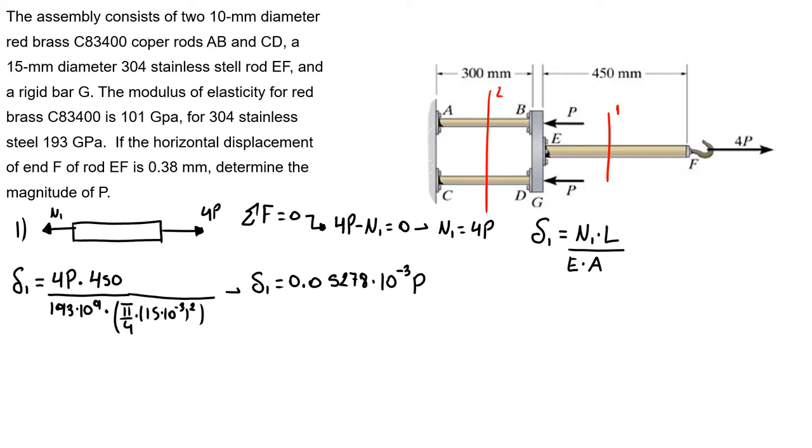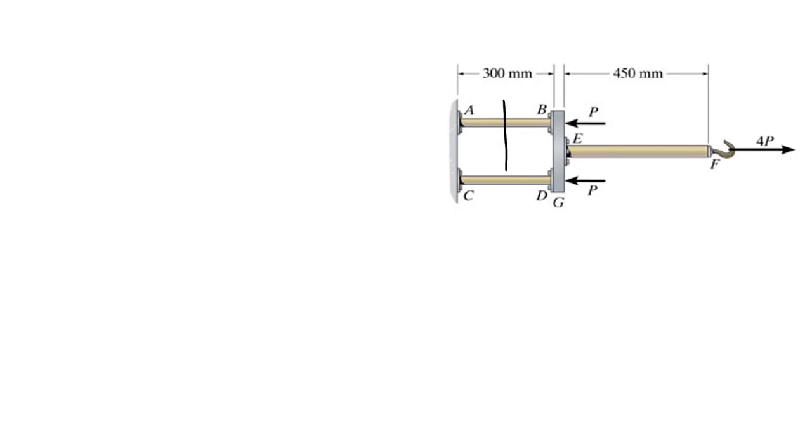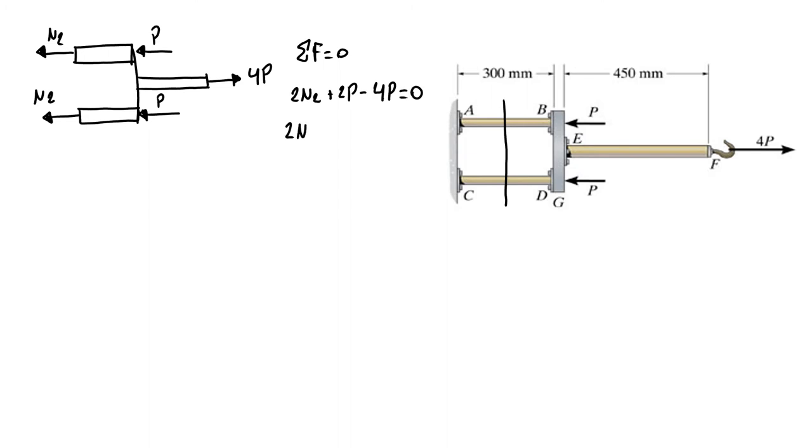Now we're going to do the analysis of the second section cut. Our second section cut is here. We have 4P, here we have P, here we have P, and here we have our N2 and N2. The sum of the forces equals zero. We have 2N2 plus 2P minus 4P equals zero, so 2N2 equals 2P. My N2 equals P.